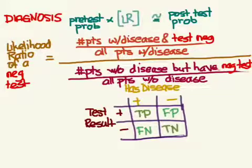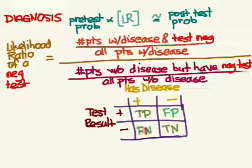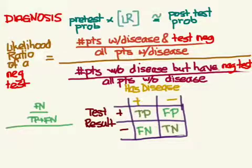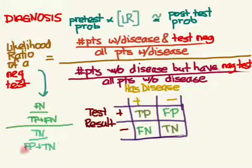This formula isn't exactly right because these are really odds if you want the math to work out, but there's a way to make it work with probabilities too. Using the table, the likelihood ratio negative has a numerator of patients with disease and a negative test — those are false negatives — over all patients with disease, which is true positives plus false negatives. The denominator is patients without disease who have a negative test — true negatives — over all patients without disease, which is false positives plus true negatives.